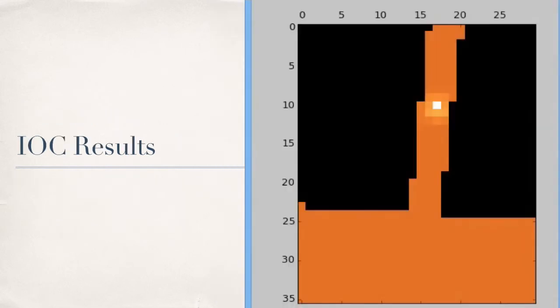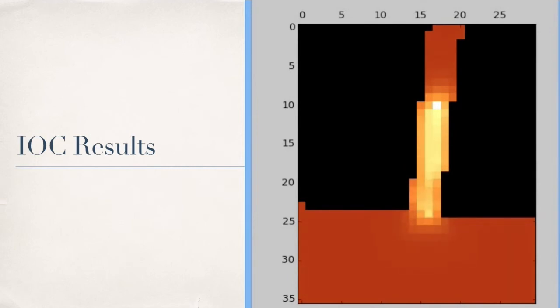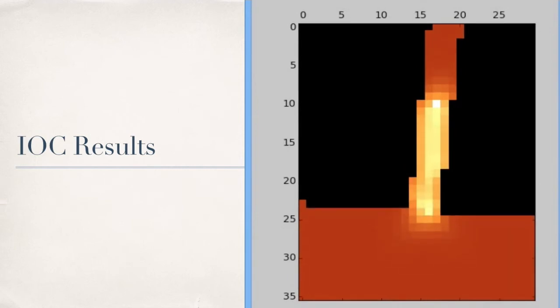Here is a result using inverse optimal control algorithm on the recording on the same corridor. The black area is the wall. The detected human is at the white grid. Now the algorithm starts to estimate the probability that a grid will be visited in the next few time steps. The brighter a grid is, the more likely it is to be visited. So effectively, the trajectory of the human is predicted.